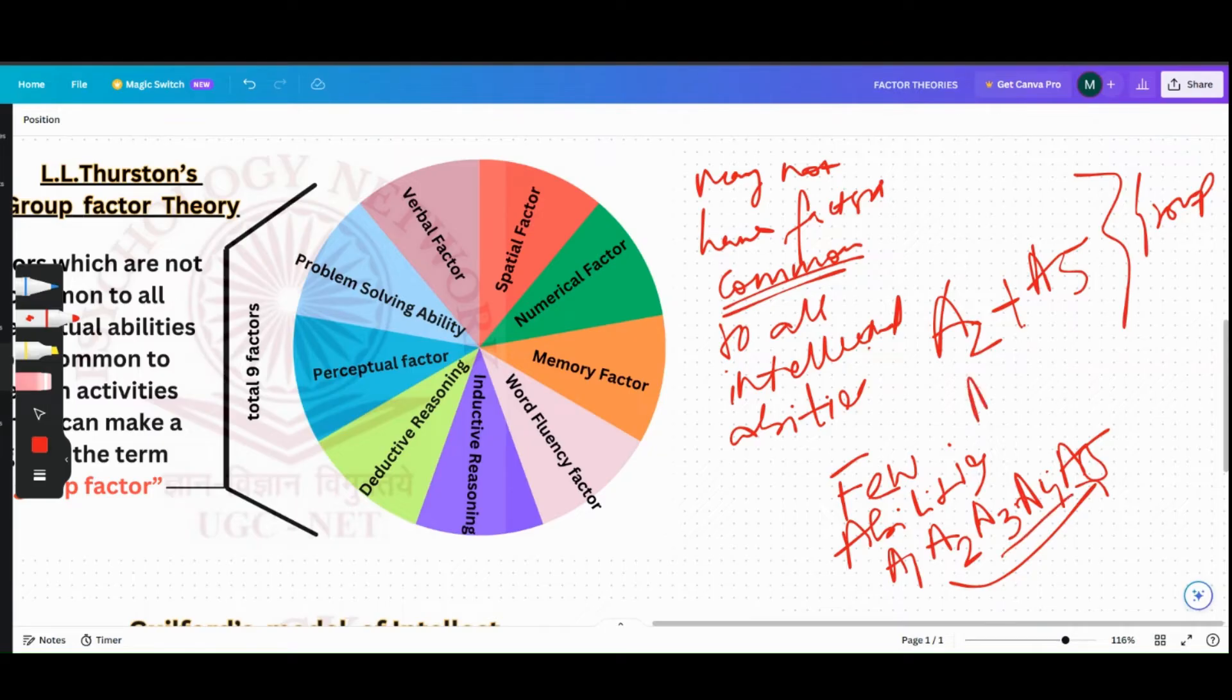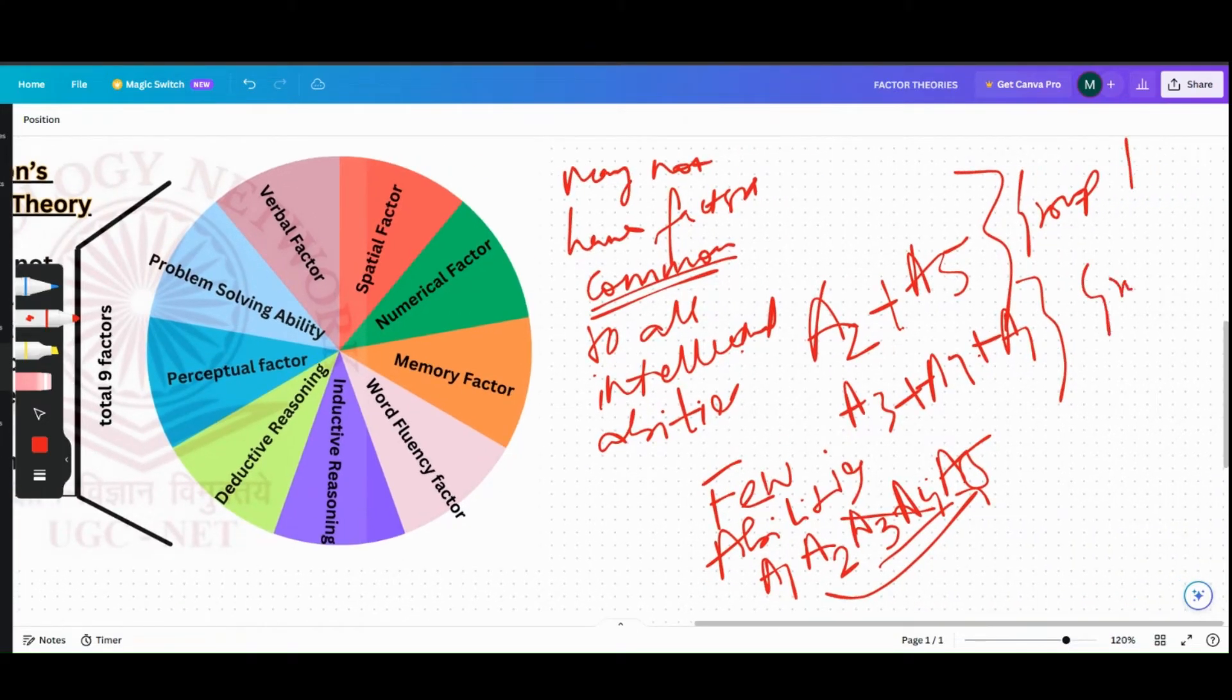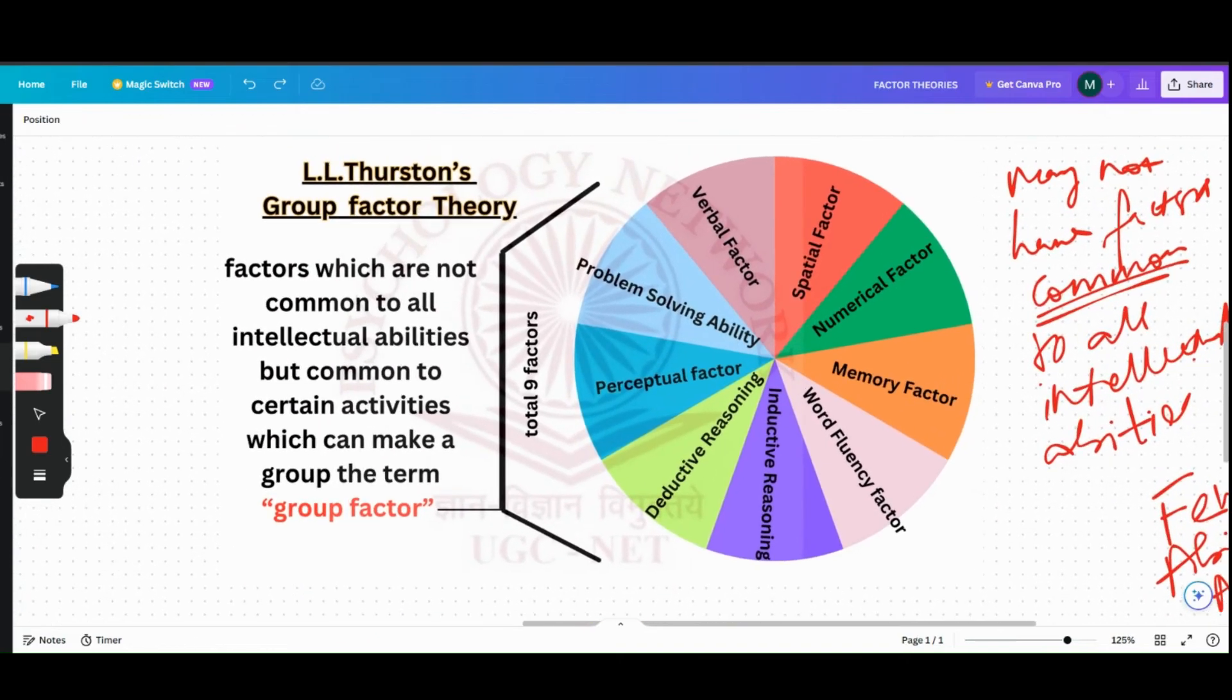Again, ability three, four, and one can be grouped, so they make another factor. If this is group one, then this makes group two, and so on. This is how he had formulated nine groups, nine factors. So actually the argument implied that there are other common factors which could overlap. And so what Thurston did, he made a group of these overlapping common factors which resulted in the Group Factor Theory.